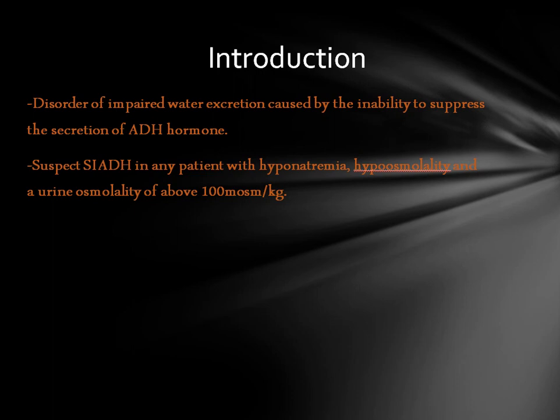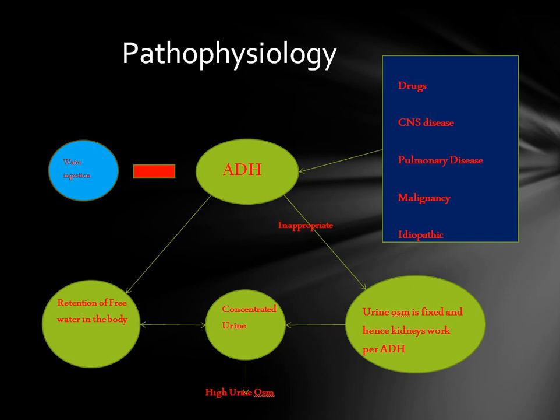SIADH is a disorder of impaired water excretion caused by the inability to suppress ADH secretion. ADH (antidiuretic hormone) is secreted by the posterior pituitary. Its job is to tell the kidneys to hold on to water — specifically, free water retention via V2 receptors in the distal tubules. This is different from sodium absorption in the PCT or DCT, where sodium absorption leads to water absorption. In the distal nephron, ADH mediates free water absorption without any relation to salt.